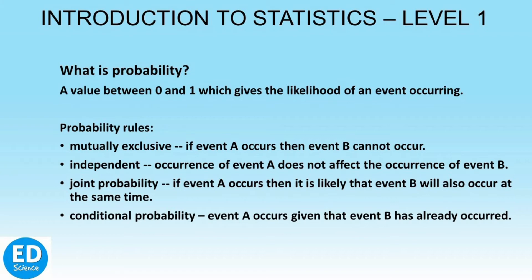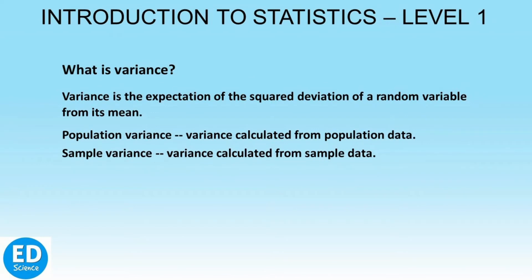A probability distribution lists all outcomes of a study and shows the probability associated with each outcome. The mean and the variance are used to summarize the probability distribution and compute the standard deviation. Variance is a measure which tells us how far a set of values are from their average values — it shows how much variation is present in the data and how far the set of values are spread out. Mathematically, variance is the average of the squared differences from the mean. There are two forms: population variance, calculated from the population data showing how data points are spread out in the given population, and sample variance, calculated from sample data and generally used when it is difficult to compute the population variance.